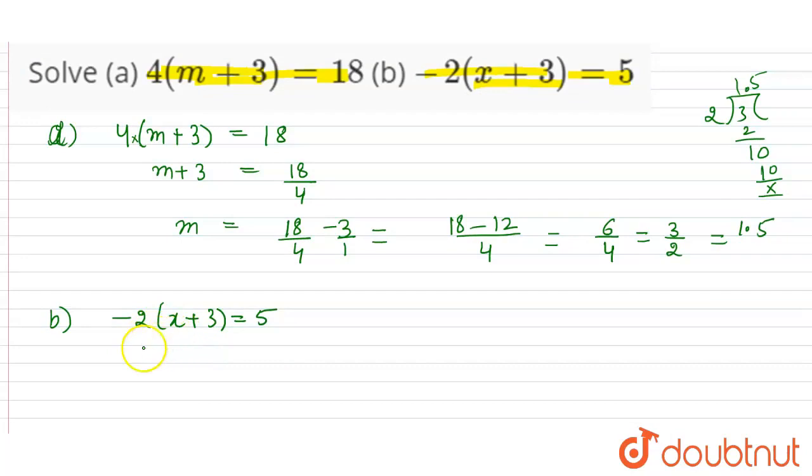We can either multiply here. This is one method that we are transferring this 4 over here, over the right hand side. Now in the second part we are multiplying each term outside the bracket.